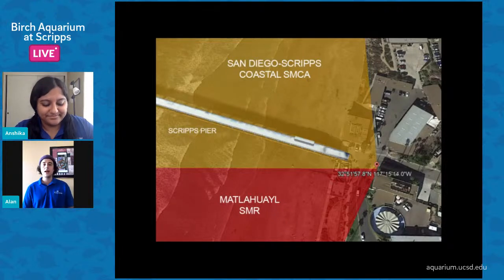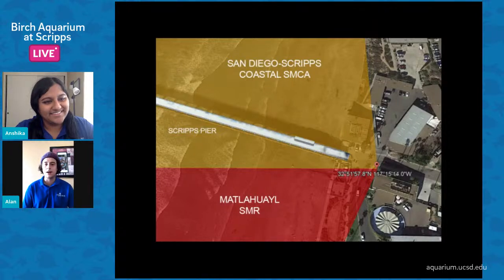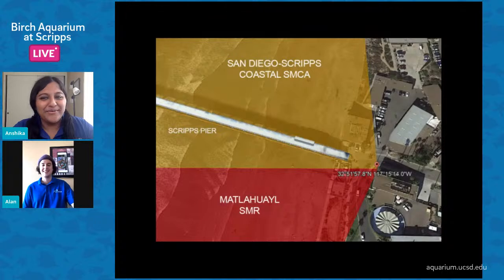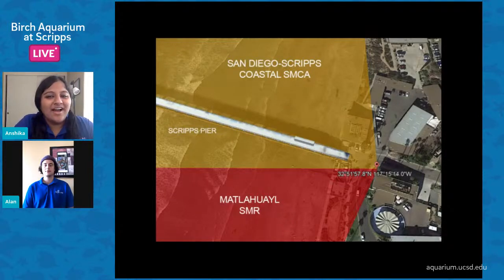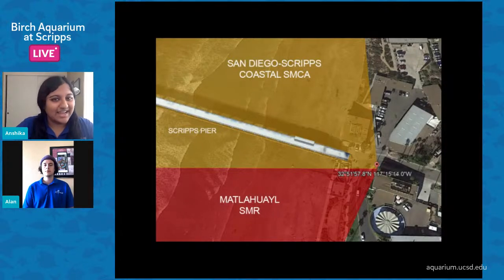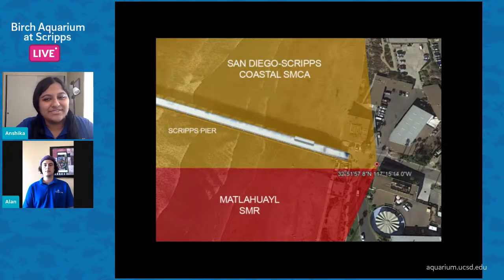Those State Marine Reserves are really important because they're a total safe haven for the animals and species living inside them. In San Diego County alone there are 11 different MPAs running all the way up and down the coast. It's really cool to see how much of our coastline is actually protected, and it's a great way to compare populations inside and outside of MPAs.